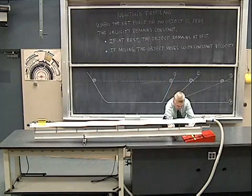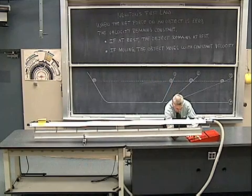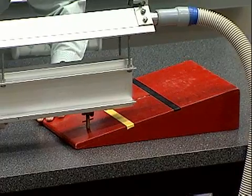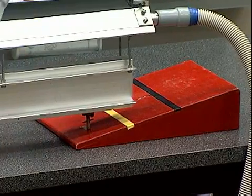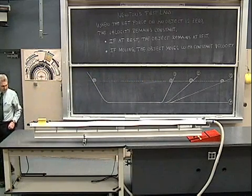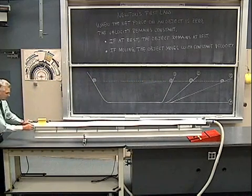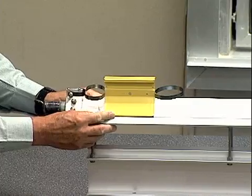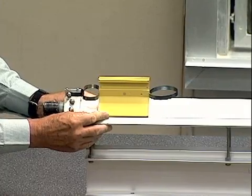Now I'm going to go to a still shallower angle and bring the track down to this position. And we'll do that same experiment only now with less slope on the track but with the same initial velocity.